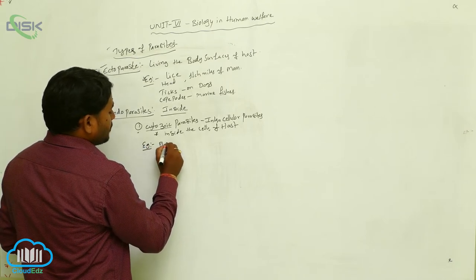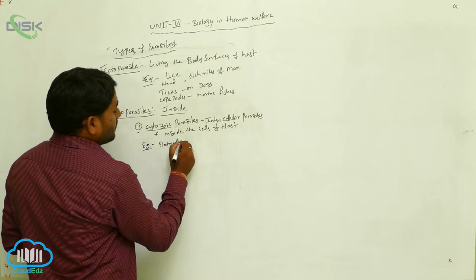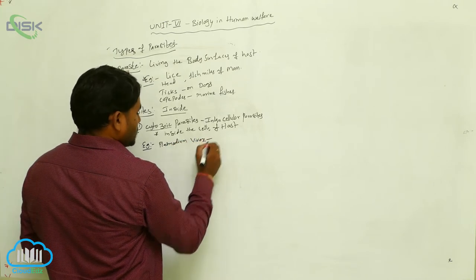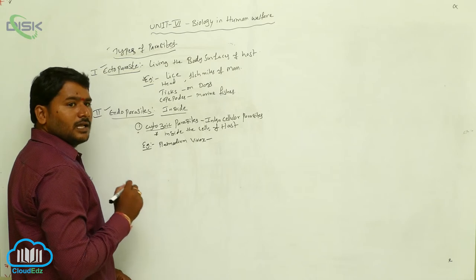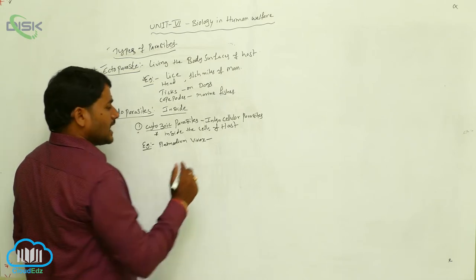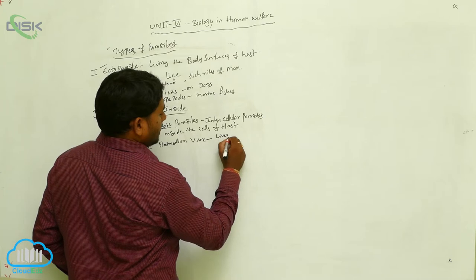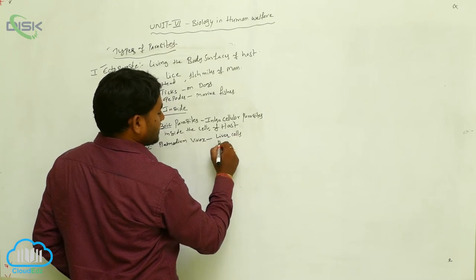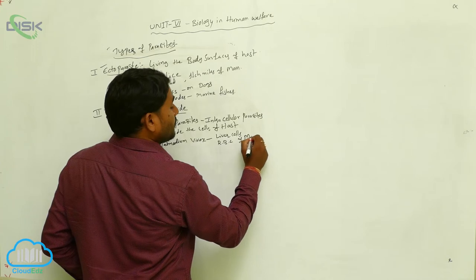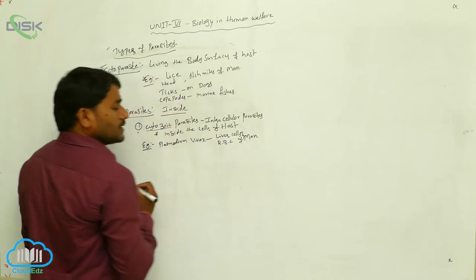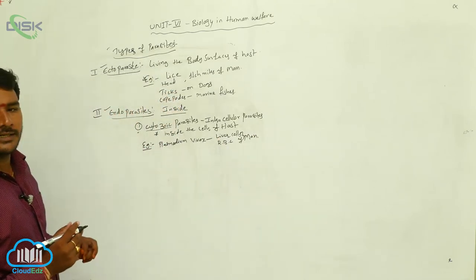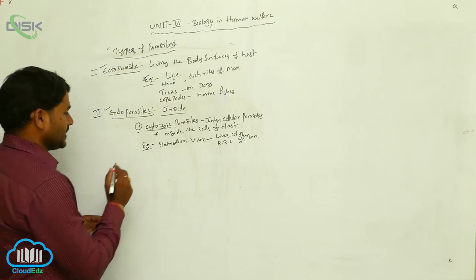For example, Plasmodium vivax lives inside the liver cells and RBCs of man. So Plasmodium vivax is a cytozoic parasite, or intracellular parasite.